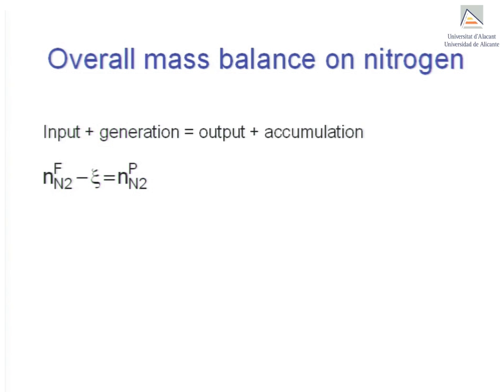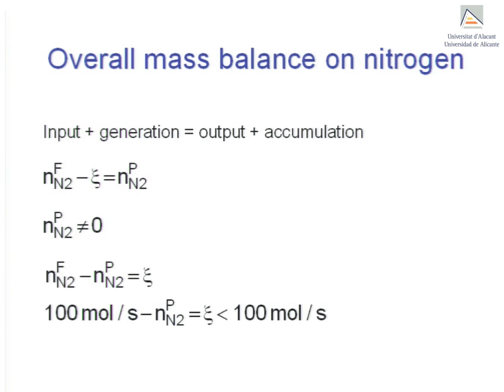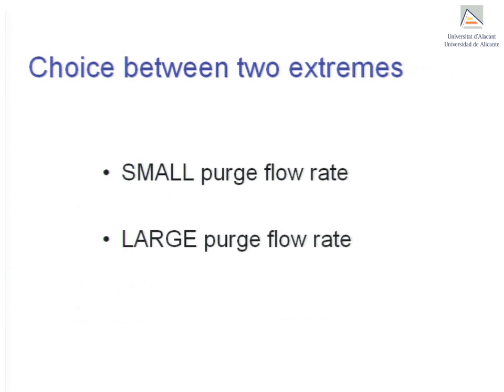Since stream F provides 100 moles per second of nitrogen and there is a loss of nitrogen through stream P that is non-zero, the extent of reaction will be smaller than 100 moles per second as a consequence. Finally, the designer is faced with a choice between two extremes: a small purge flow rate or a large one. This aspect, together with the remaining considerations regarding purge streams, is addressed in part two of this video.